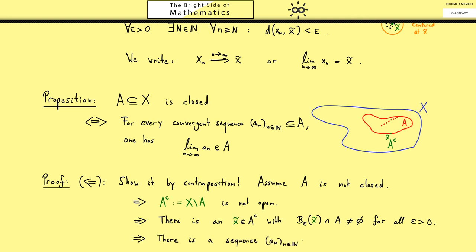Hence we conclude that we can construct a sequence AN where each AN comes from one of these sets here where for example we set epsilon as 1 over N. If we do that then we know that AN converges to x tilde because we get closer and closer to x tilde if we increase the index N.